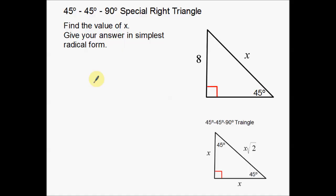And welcome back. Today we're going to talk about 45-45-90 special right triangles. In this video I'm going to work through two examples of solving for either the hypotenuse or one of the legs of a 45-45-90 triangle.